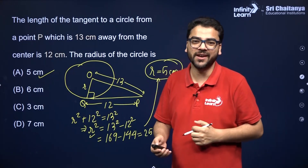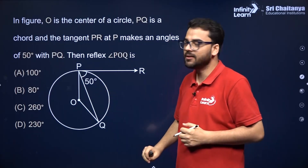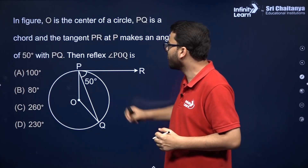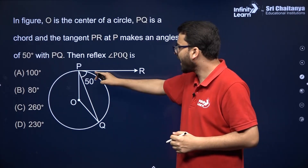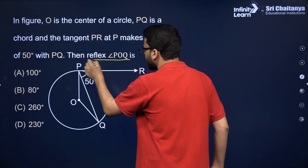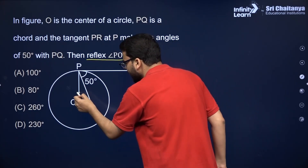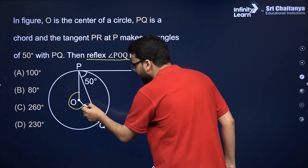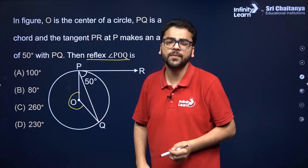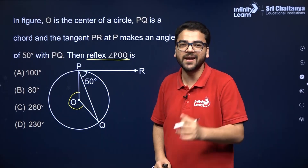Let us take the next question. In the figure, O is the center of the circle. PQ is a chord. PR is a tangent at point P and it makes an angle of 50 degrees with chord PQ. You have to find the value of reflex angle POQ. First find angle POQ, then you can easily find the reflex angle POQ.